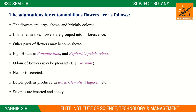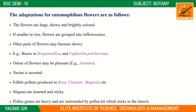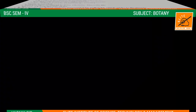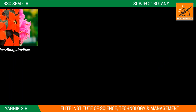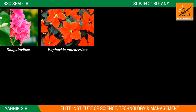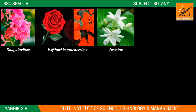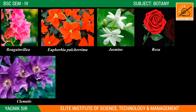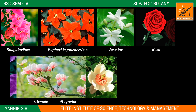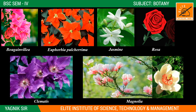In entomophily, flowers produce edible pollen in plants like Rosa, Clematis, and Magnolia. Stigmas are inserted and sticky. Pollen grains are heavy and surrounded by pollen kit which sticks to the insect. Examples include Euphorbia pulcherrima and Morgania well which produce strong odors or nectars to attract insects.